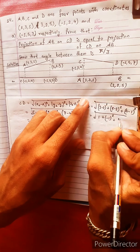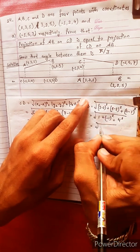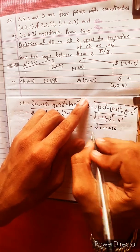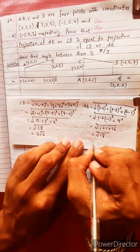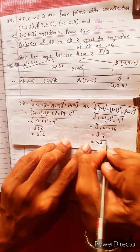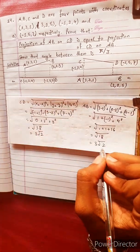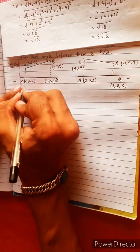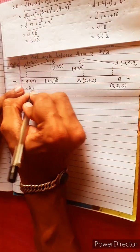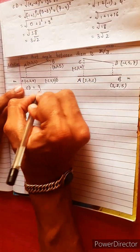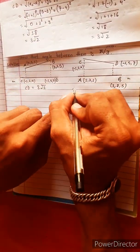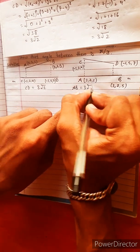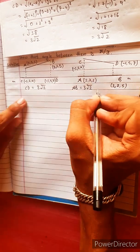After calculation, there is a plus 4, under root 18, then 3 root 2. So CD equals 3√2 units, and AB equals 3√2 units. Now we take the length and proceed to find the direction cosines.